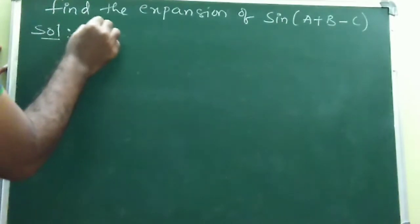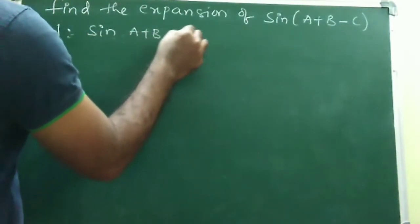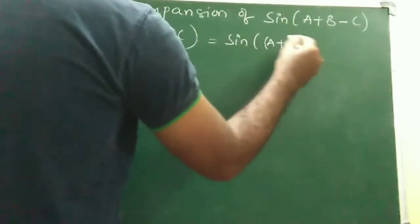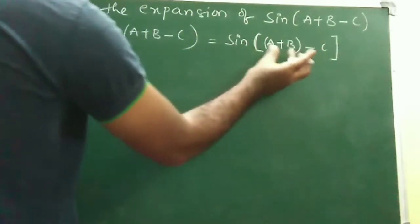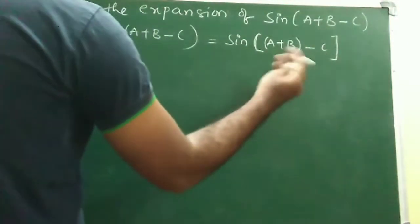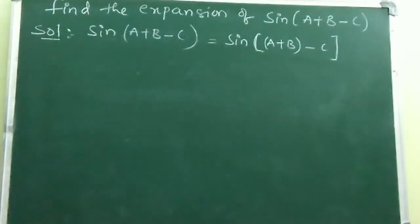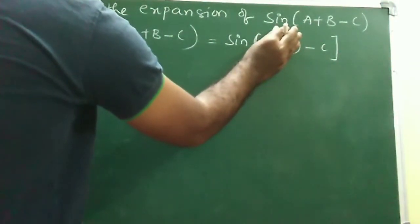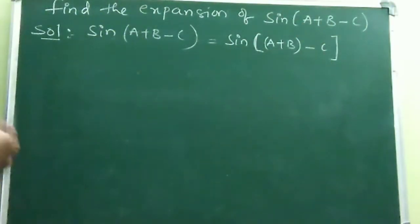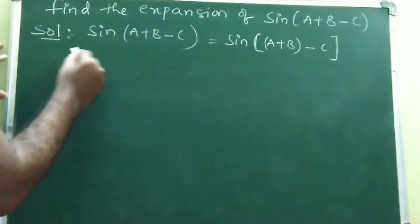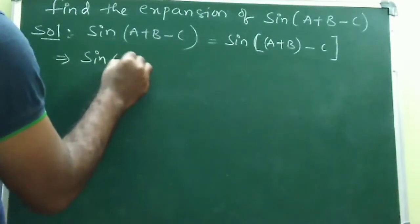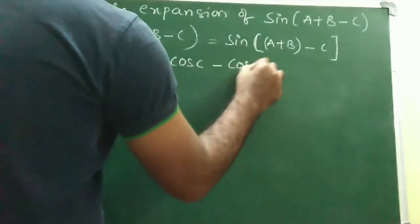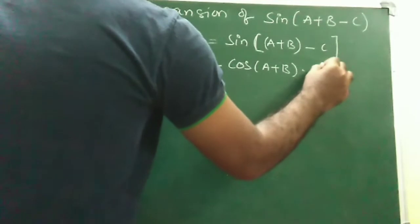Write sin(A + B - C) by taking any two angles together. Consider (A + B) as one quantity and C as another. This is just like sin(something - something), i.e., sin(A - B) form where capital A is (A+B) and capital B is C. Apply the formula sin(A - B) = sin A·cos B - cos A·sin B.